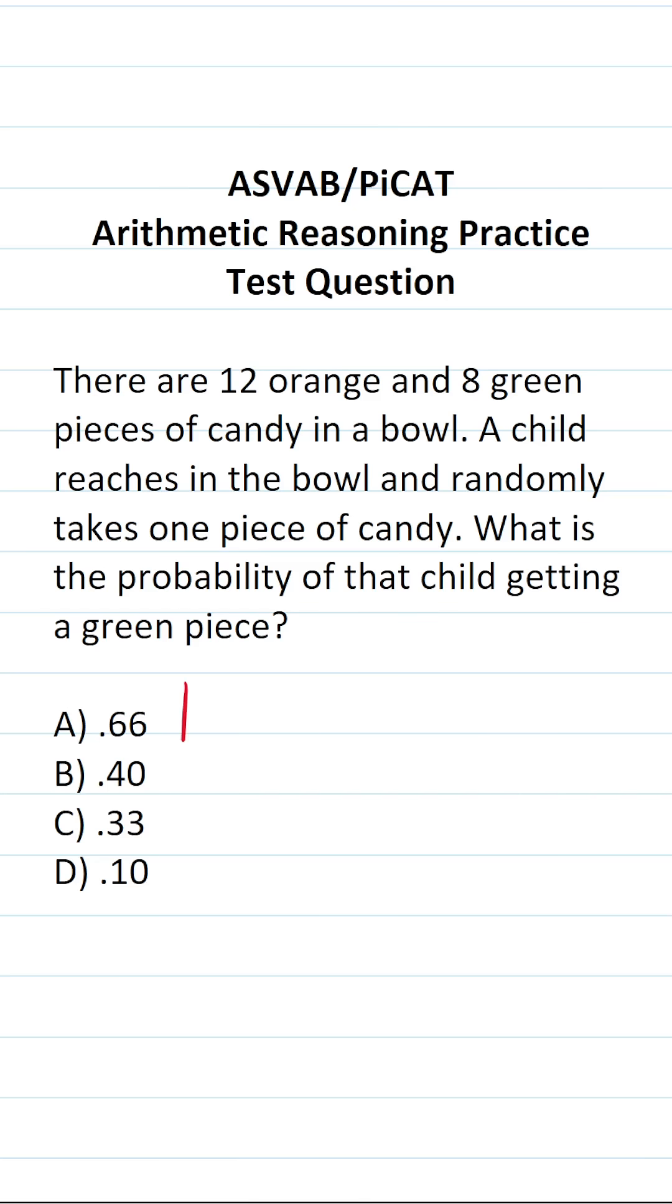So the probability of that child selecting a green piece of candy randomly is going to be equal to the number of green pieces of candy in the bowl, which is 8 according to the problem,